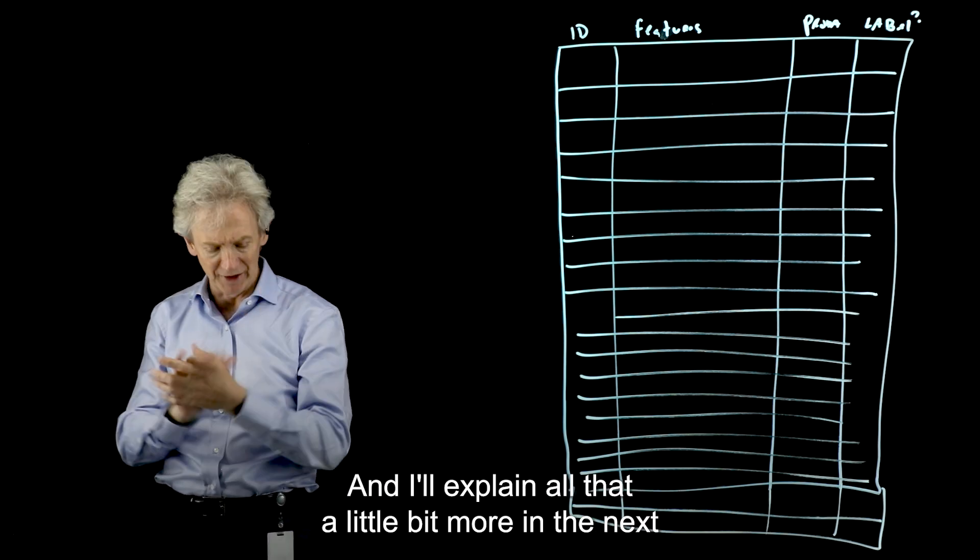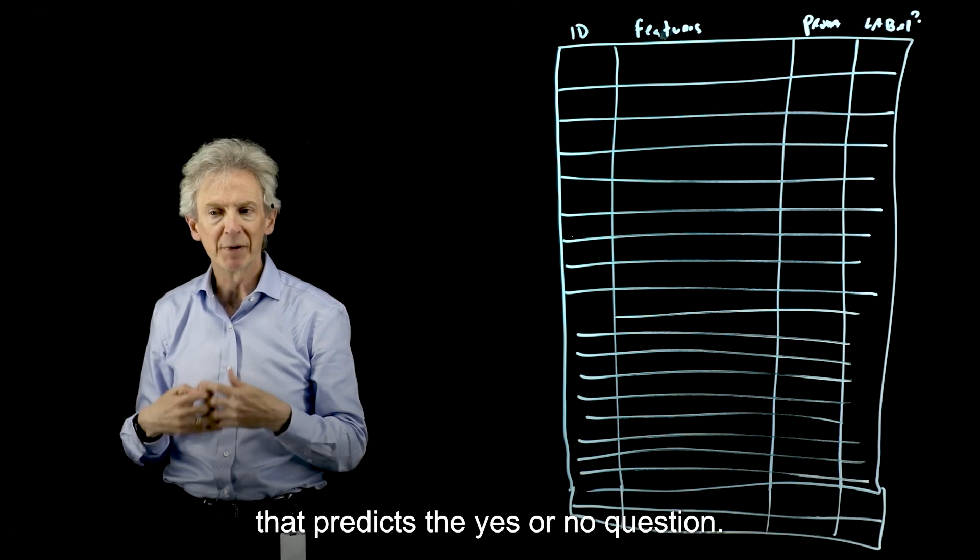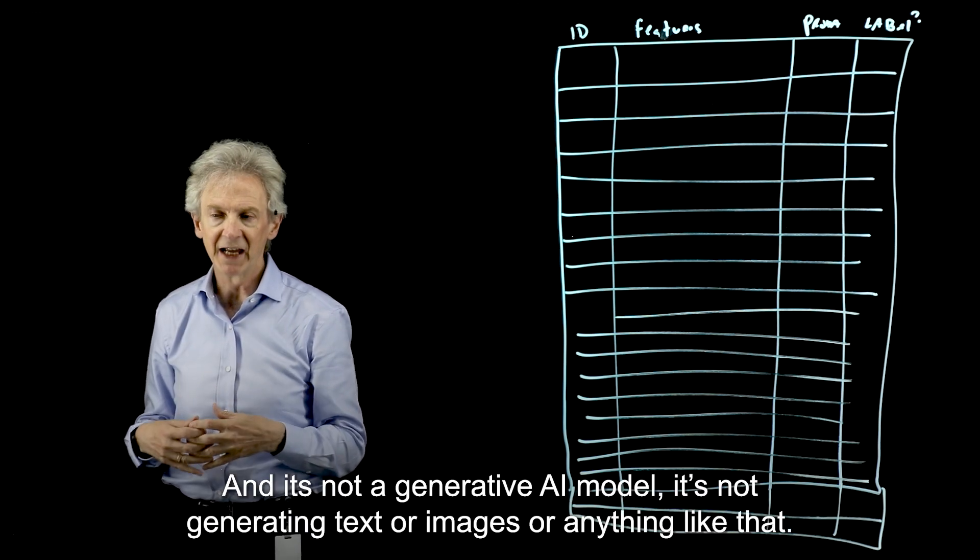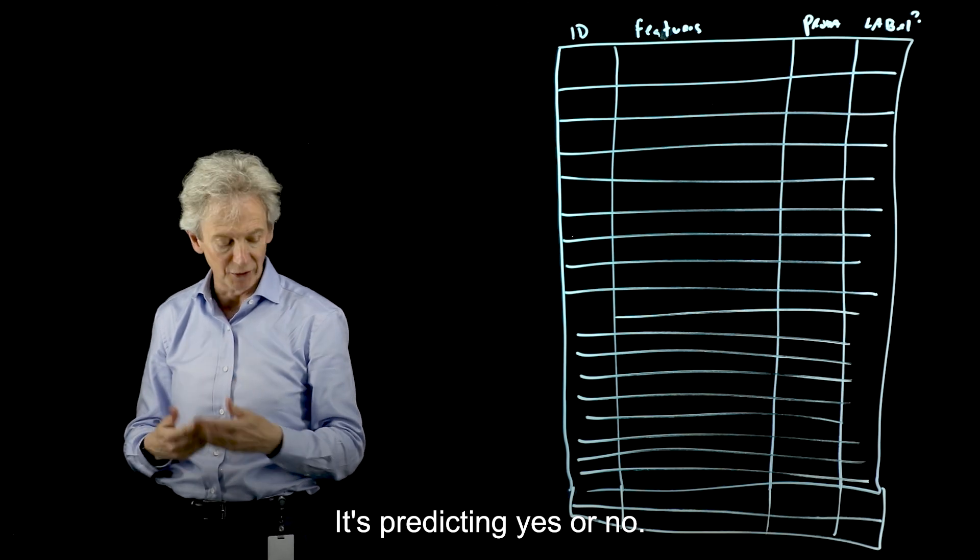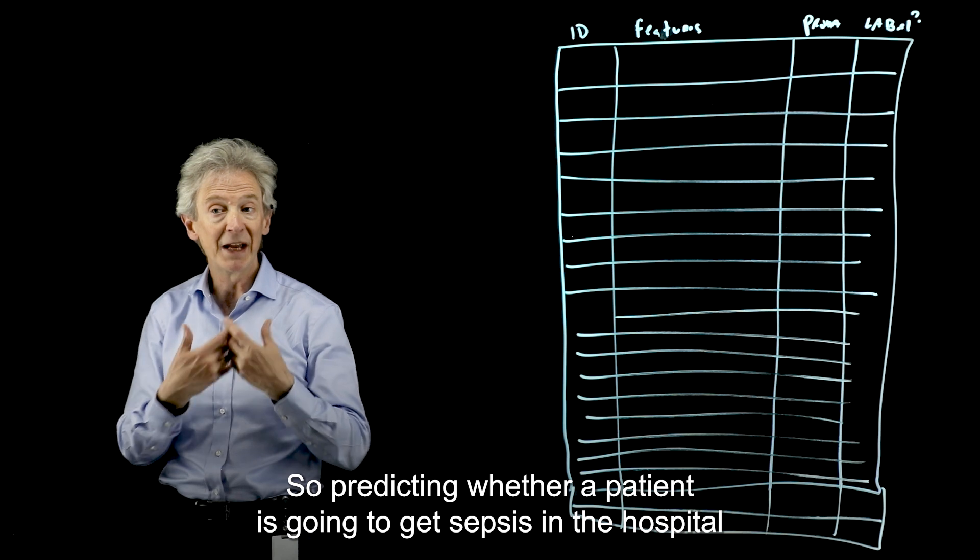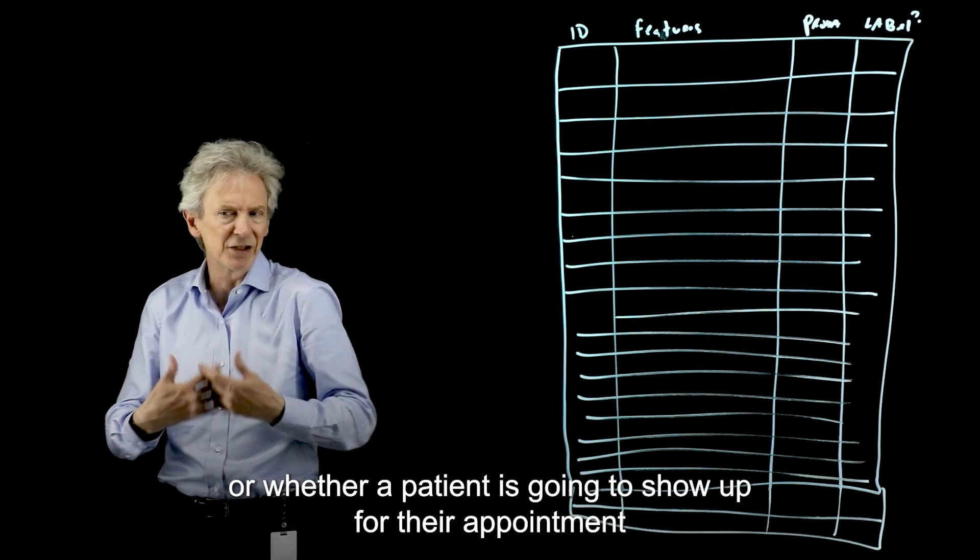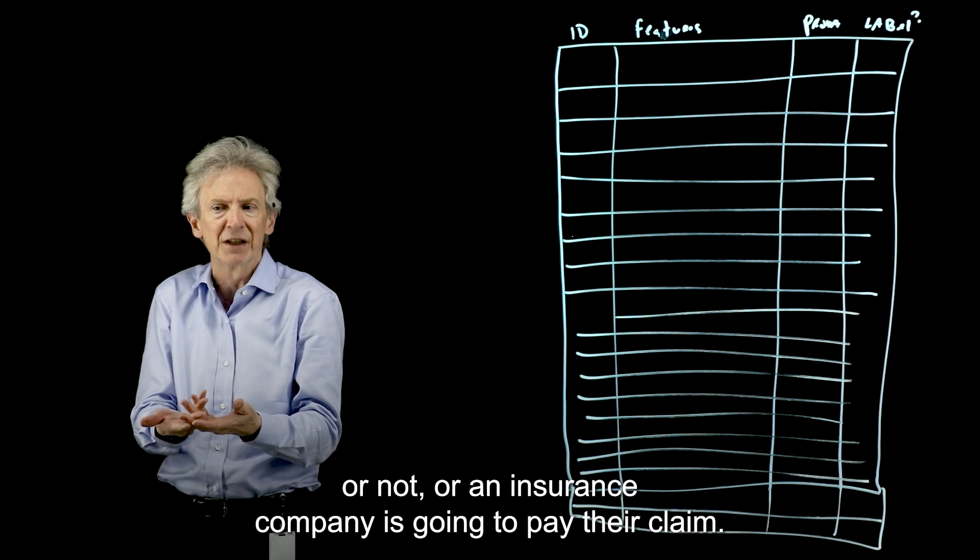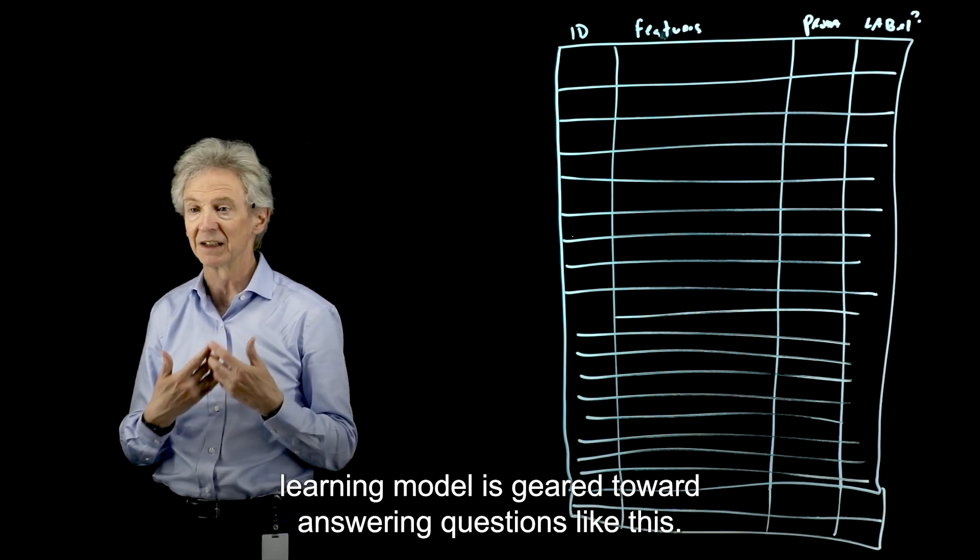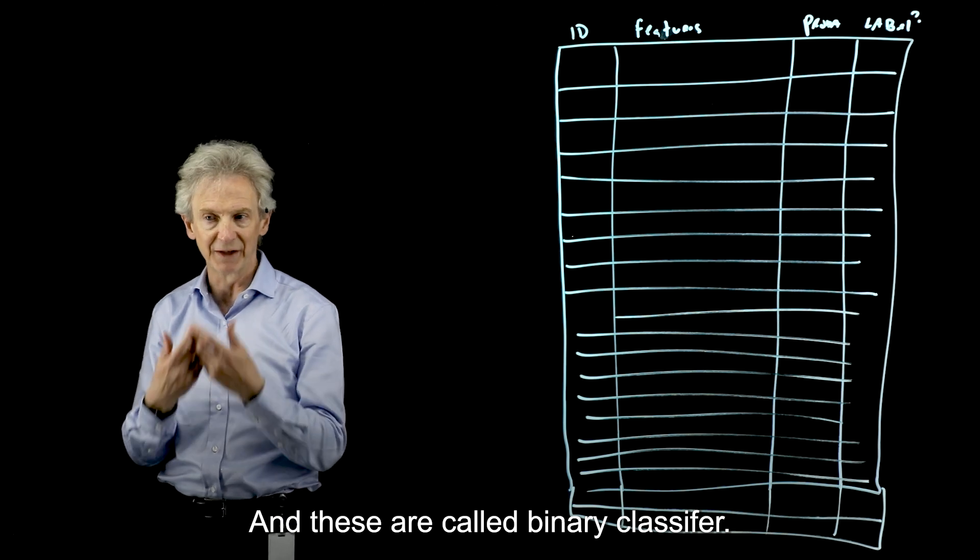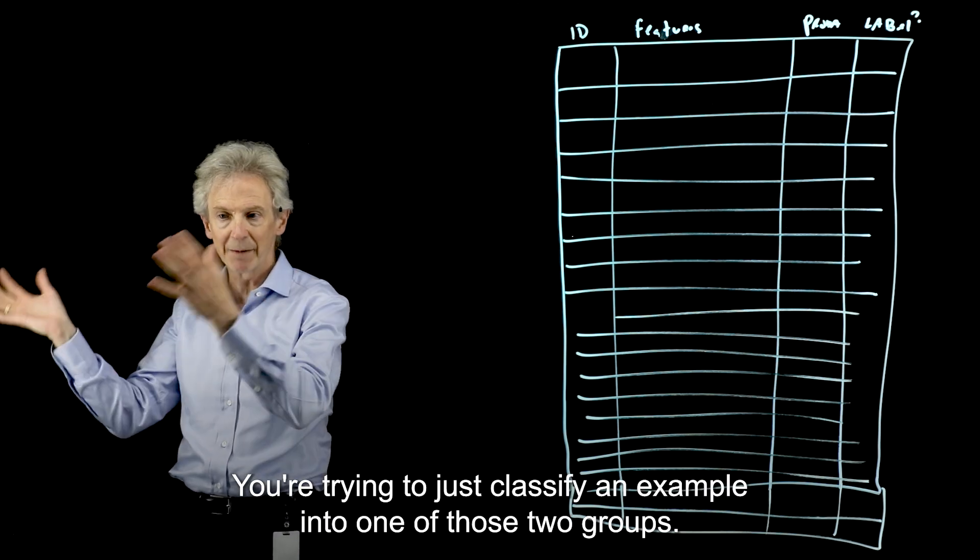I'll explain all that a little bit more in the next few minutes. So the example that I'm going to use is a machine learning model that predicts a yes or no question. It's not a generative AI model, not generating text or images. It's predicting yes or no. And a ton of models are like this - predicting whether a patient's going to get sepsis in the hospital, whether a bank transaction is fraud, whether an email is spam, whether a patient's going to show up for their appointment, or whether an insurance company is going to pay their claim. These are called binary classifiers. It's a yes-no question. You're trying to classify an example into one of those two groups.